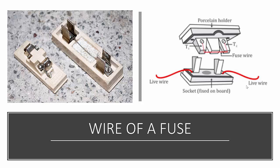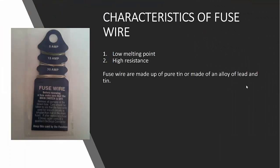A copper or aluminium wire is unsuitable for use as a fuse wire because they have a high melting point. Ordinary copper and aluminium wire must be avoided because it is very thick, so the resistance will be low and it will allow current higher than the safe limit. A fuse wire permits current flow only up to a certain fixed limit called the current rating of the fuse. The characteristics of fuse wire are low melting point and high resistance. Fuse wire is made of pure tin or an alloy of lead and tin. Available fuse wire ratings are 5 ampere, 15 ampere, and 30 ampere.